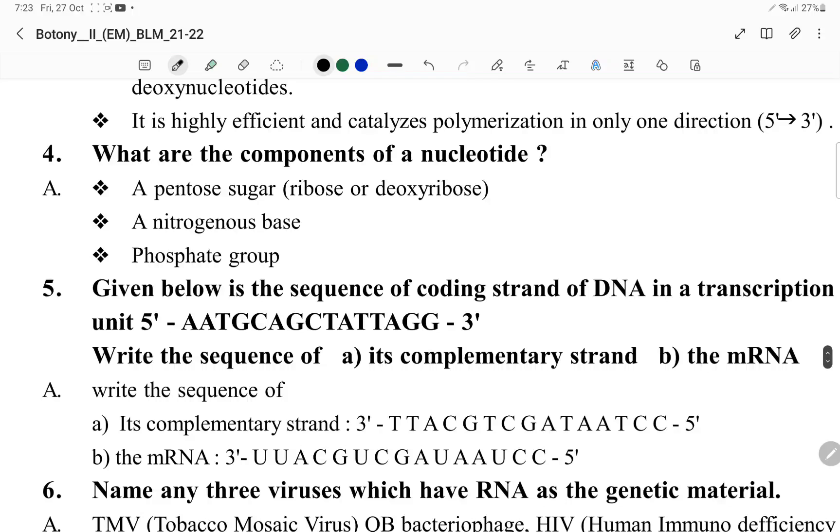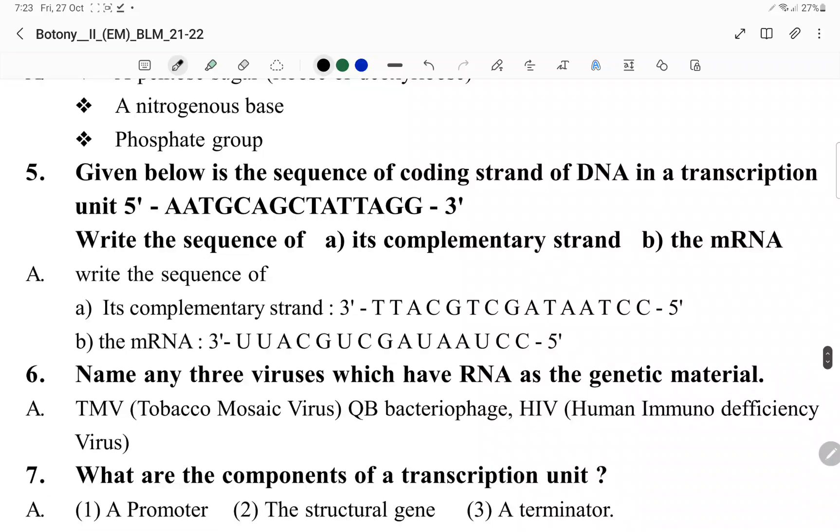A nucleotide has a pentose sugar, nitrogenous base, and phosphate group. Sugar and nitrogenous base together form a nucleoside. Nucleoside plus phosphate group forms a nucleotide. The complementary strand is the mRNA. Visually, the complementary strand is in the opposite way, we have mRNA.